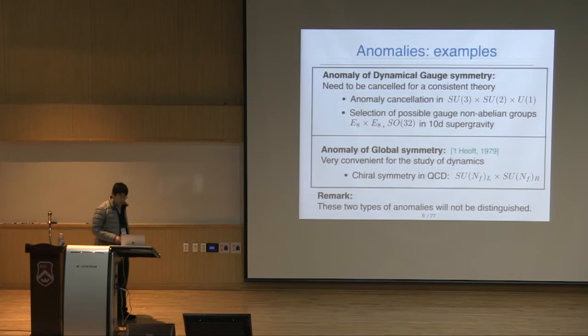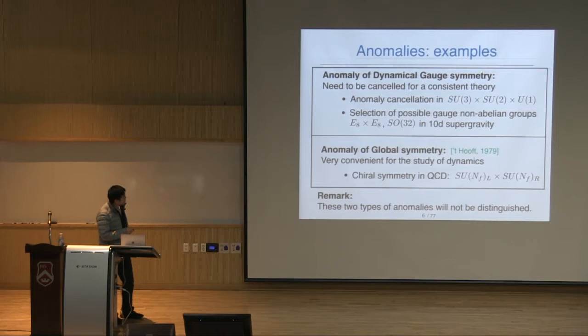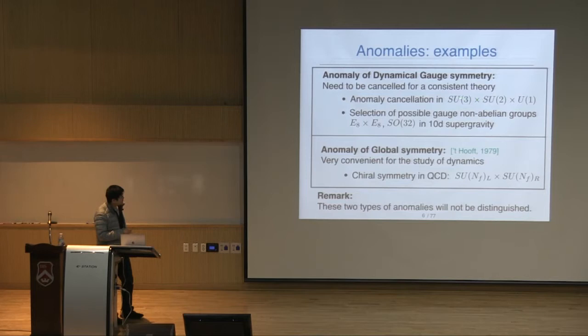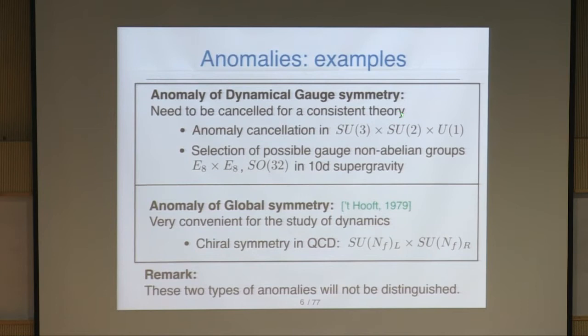Examples of how anomalies are used: first, there are anomalies of dynamical gauge symmetries and anomalies of global symmetries. Anomalies of dynamical gauge symmetries must be cancelled for consistency of the theory. For example, the anomaly is cancelled in the standard model, SU(3) × SU(2) × U(1), at least at the perturbative level. It is very non-trivial to check anomaly cancellation at the non-perturbative level, but at the perturbative level it can be computed by simple computation.